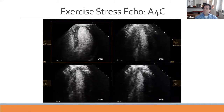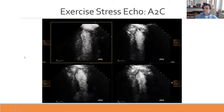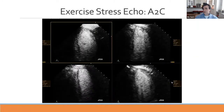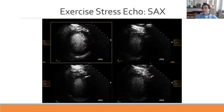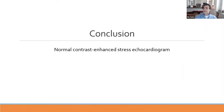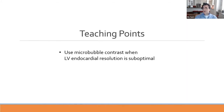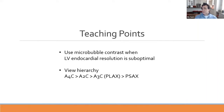Microbubble contrast is a major area of use in stress echocardiography. The view hierarchy is apical four-chamber, apical two-chamber, then parasternal short axis. If parasternal long axis and short axis views are lost initially, they may be shadowed by contrast in the right heart.